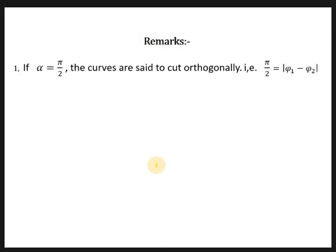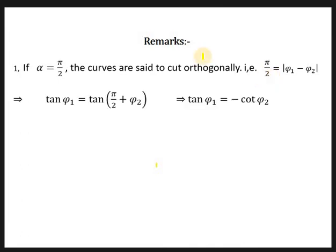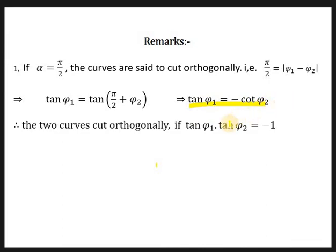If α = π/2, then the curves are said to cut orthogonally. That means, if the difference between φ1 and φ2 is π/2, then tan φ1 = tan(π/2 + φ2) = −cot φ2, which implies tan φ1 · tan φ2 = −1. This is the condition for the orthogonality of two curves.